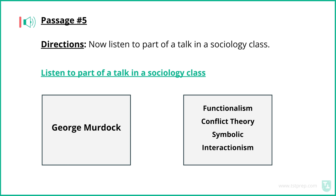Now, there is one more popular lens that many sociologists look through, and that's symbolic interactionism. Interactionists view the world in terms of symbols and the meanings assigned to them. The family itself is a symbol. To some, it is a father, mother, and children. To others, it's any union that involves respect and compassion. Interactionists stress that family is a social phenomenon that changes meaning based on the time, place, and culture.